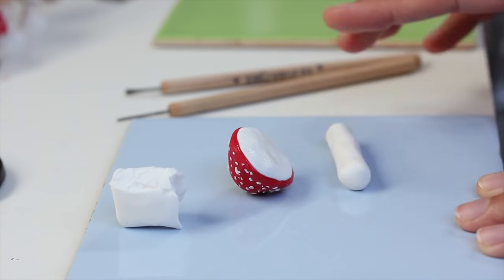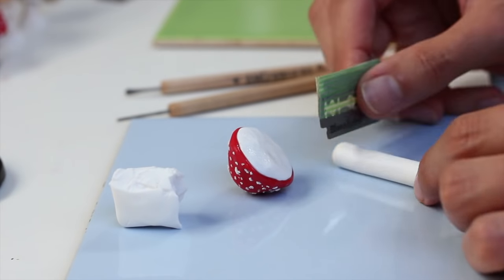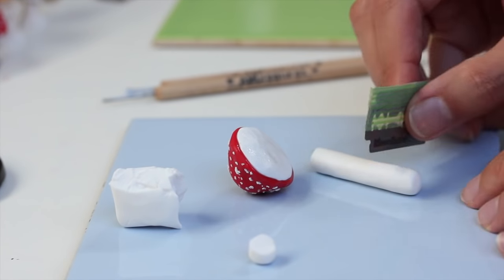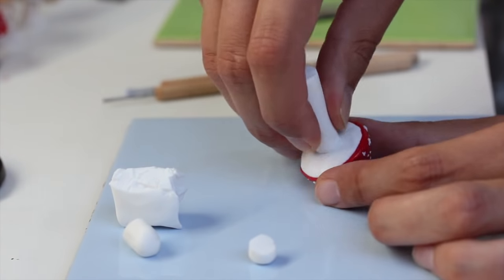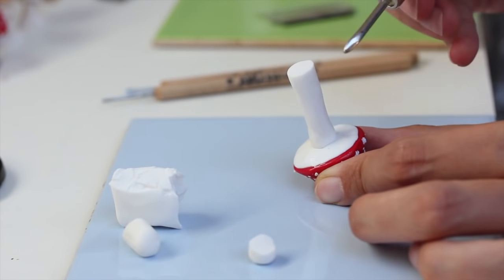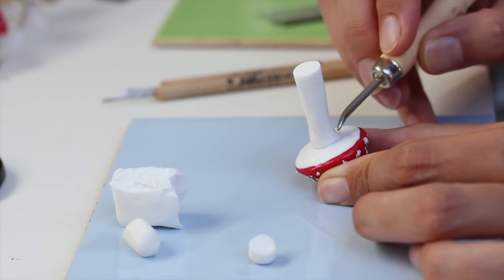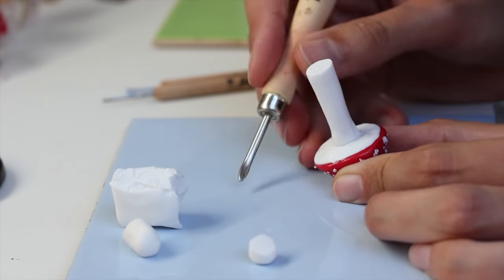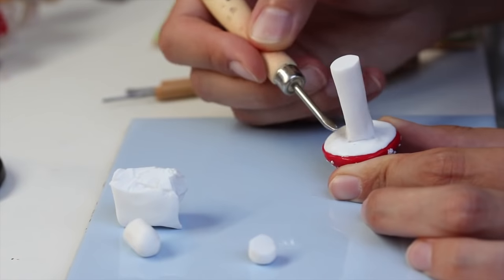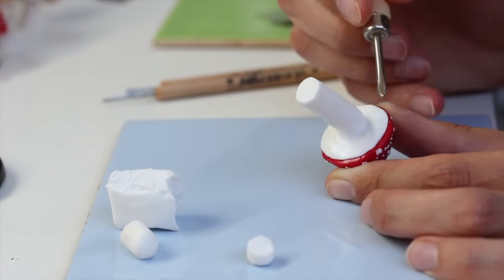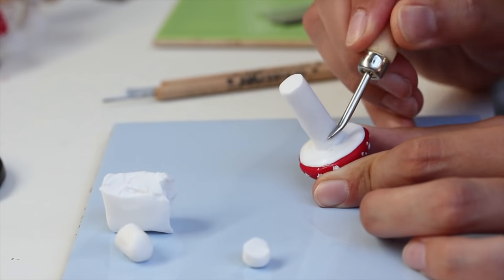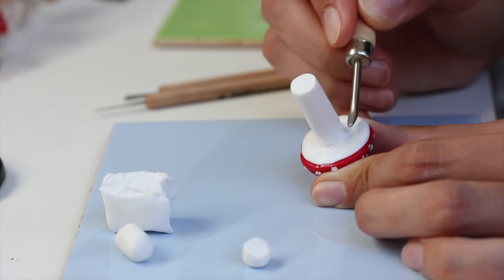For the stem, just roll out a piece of tubular clay. Cut the ends and add on top. Then using a tool, any kind of sculpting tool will do, a silicone tool works as well or a toothpick, smooth out the edges so the stem sticks nicely to the mushroom cap.